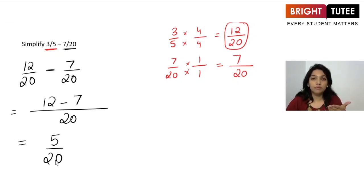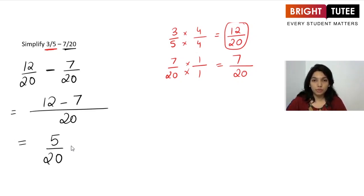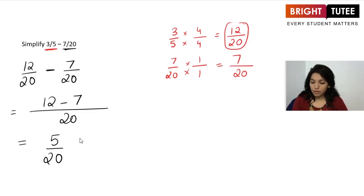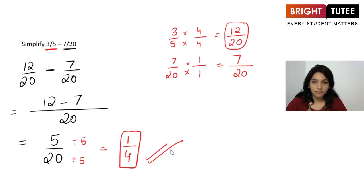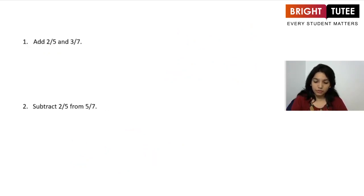The question says simplify, so we reduce 5 over 20 to its simplest form. Both 5 and 20 are in the 5 times table, so dividing numerator and denominator by 5 gives the answer 1 over 4. This is the final answer because we cannot simplify it further.